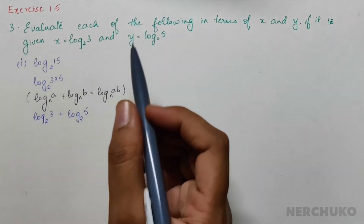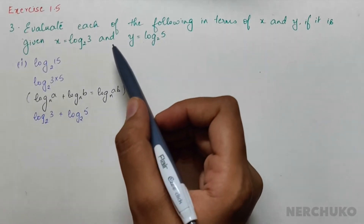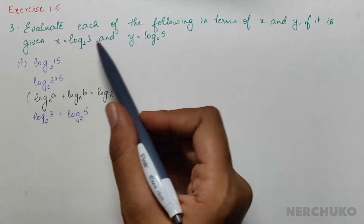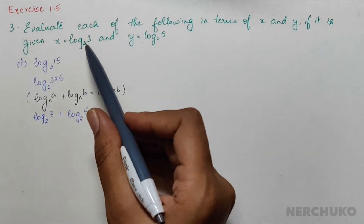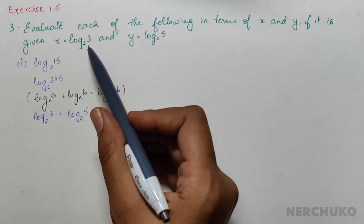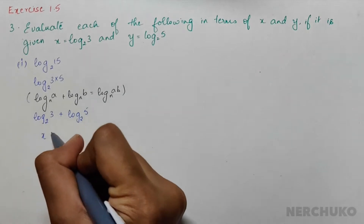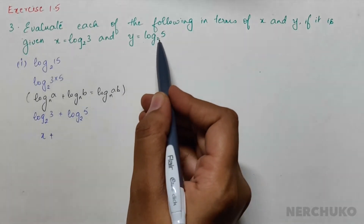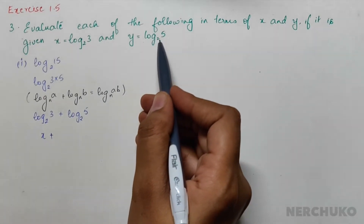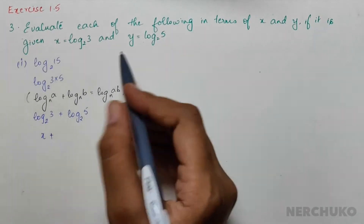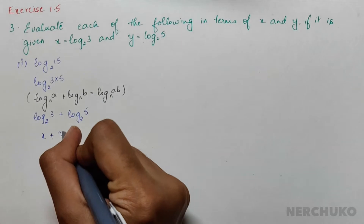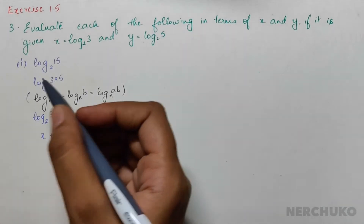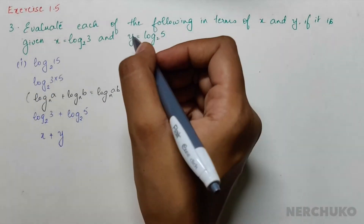The question asks us to write the answer in terms of x and y. Here x equals log 3 to base 2 and y equals log 5 to base 2. So our answer is x plus y.